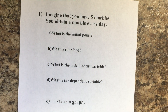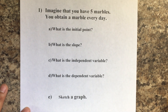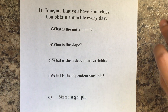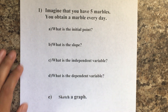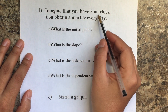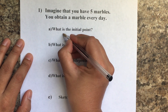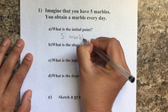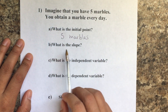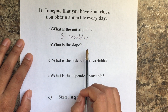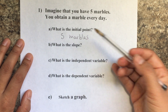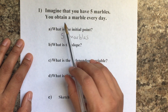Let's start with the first scenario. It says: imagine that you have five marbles and you obtain a marble every day. What is the initial point? What do you start with? You start with five marbles. And then it says: what is the slope? The slope is going to be what happens and how often.